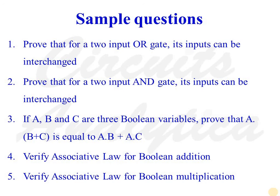These are some sample possible questions. Prove that for a two-input OR gate, its inputs can be interchanged. Prove that for a two-input AND gate, its inputs can be interchanged. If A, B, and C are three Boolean variables, prove that A AND (B OR C) is equal to (A AND B) OR (A AND C). Verify associative law for Boolean addition. Verify associative law for Boolean multiplication.